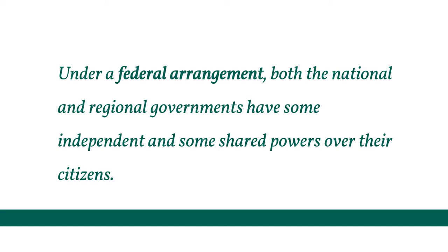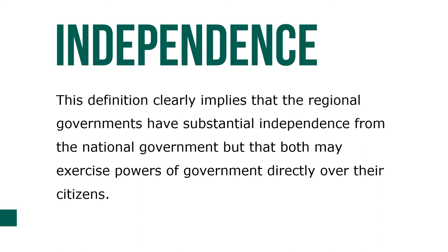Under a federal arrangement, both the national and regional governments have the same independent and some shared powers over their citizens. Neither government owes its legal existence to the other, as local governments in the United States do to the states. This definition implies that regional governments have substantial independence from the national government, but both may exercise powers directly over their citizens, creating questions about how authority is exercised simultaneously by different units sharing jurisdiction.